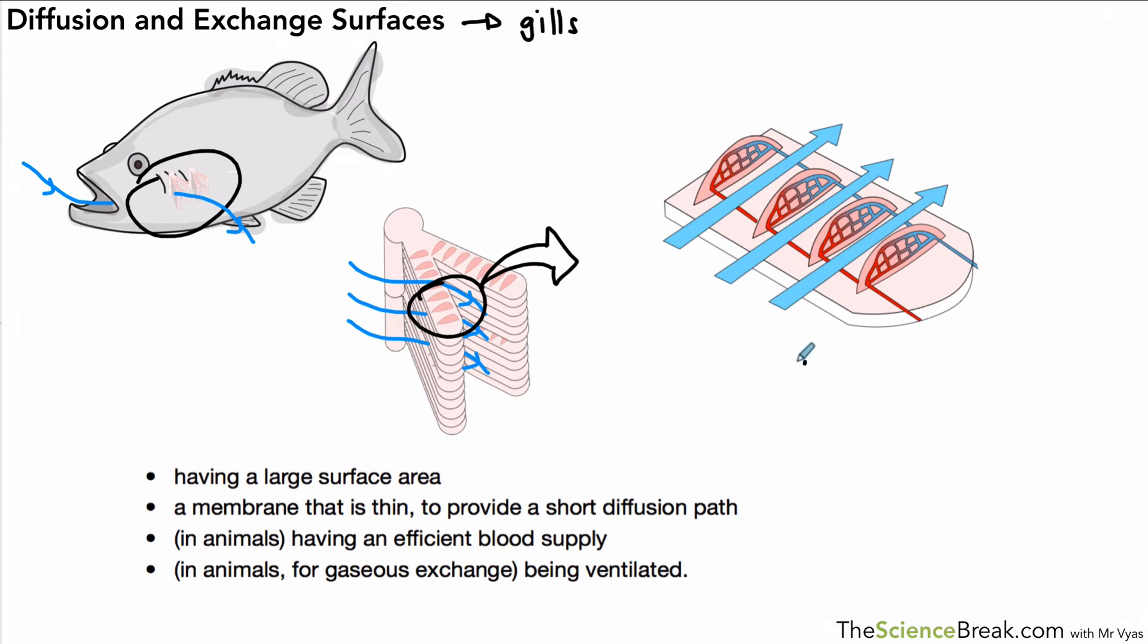If we magnify that section there we just have one little part there and that's called a gill filament. So which one of these bullet points apply to the gills and the gill filaments? Well again we've got a large surface area because we have many many gill filaments and that provides a large surface area. We've got a very thin membrane as you can see there to provide a short diffusion distance so the oxygen doesn't have to diffuse very far into the gill filament.